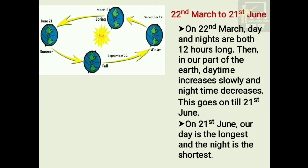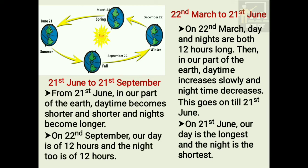Now let us learn the duration from 21st June to 21st September. From 21st June, in our part of the earth, daytime becomes shorter and shorter and nights become longer. On 22nd September, our day is 12 hours and the night too is 12 hours.